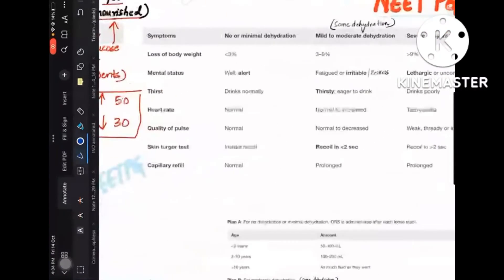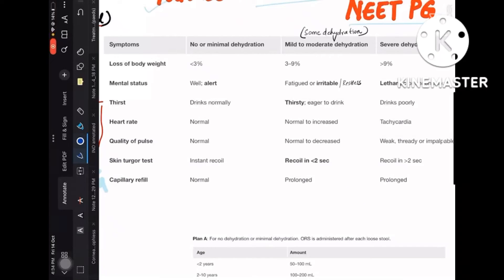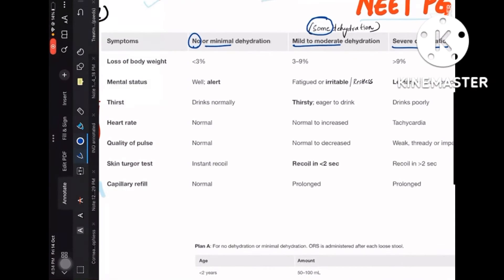Now let's discuss about the different categories of dehydration. One is no or minimal dehydration. The second is mild to moderate, which is otherwise called some dehydration. And the third one is severe dehydration. Loss of body weight is 3 to 9% in the middle—that is moderate. First, let's learn the middle values, like some dehydration.